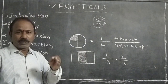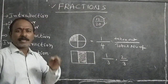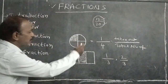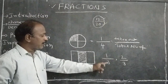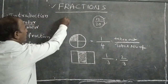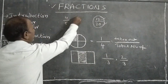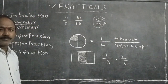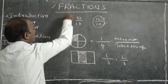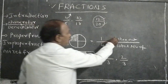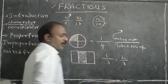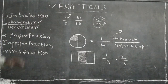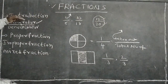A fraction is a part of whole or a group. Here we are representing fractions like 1 by 4, 1 by 3, 2 by 3, 4 by 5, 10 by 8, and so on. The upper portion — that is, the number of taken-out equal parts — is known as the numerator. The upper portion of the fraction is called numerator.